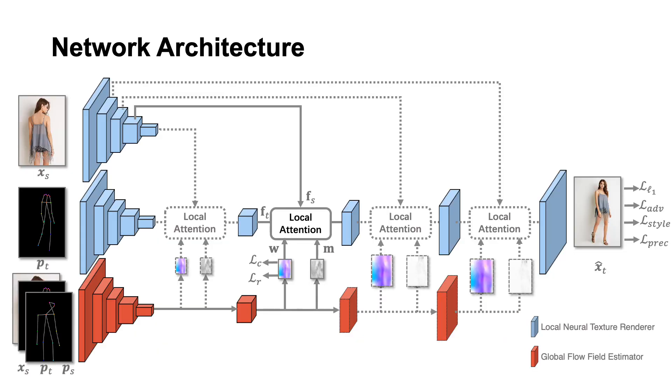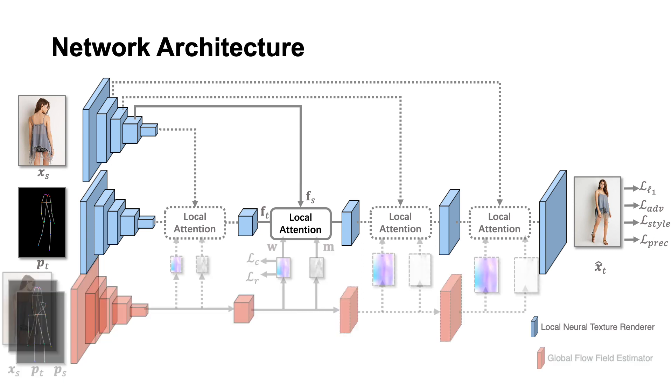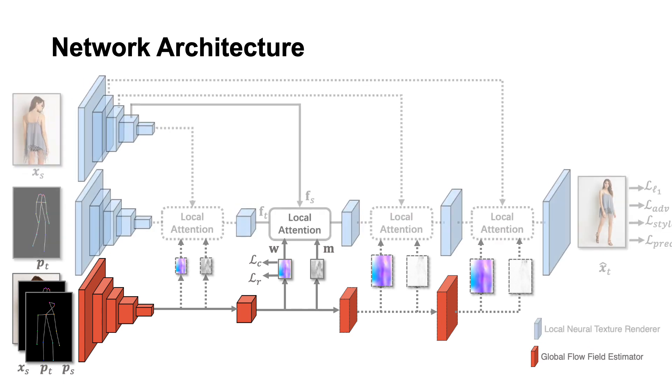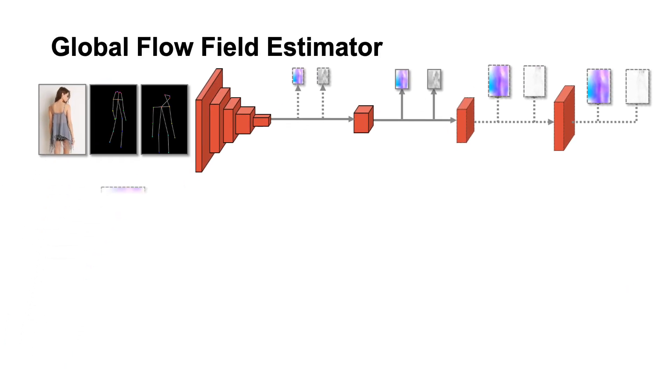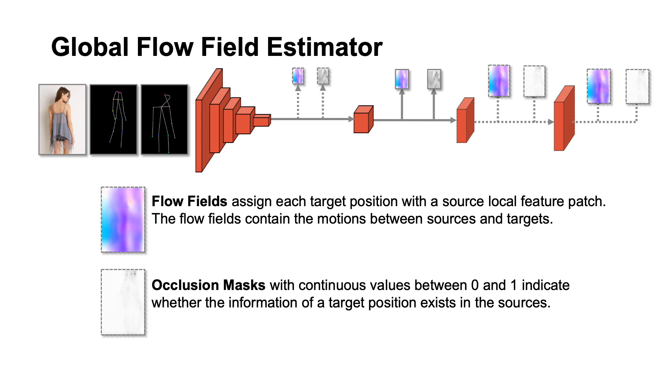Our global flow local attention model consists of two modules: global flow field estimator and local neural texture renderer. The global flow field estimator is used to predict flow fields and occlusion masks using source images, source skeletons, and target skeletons.